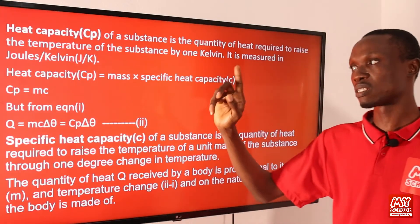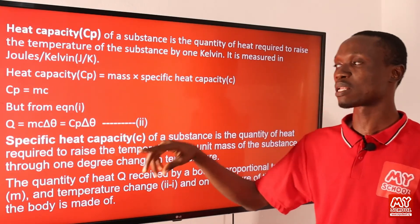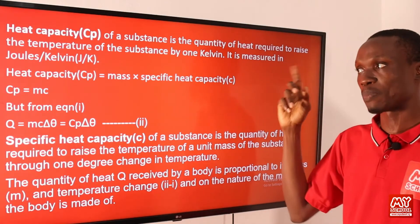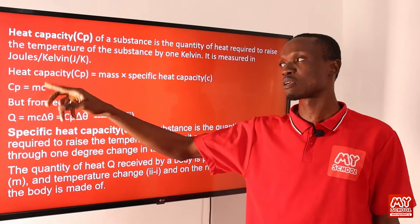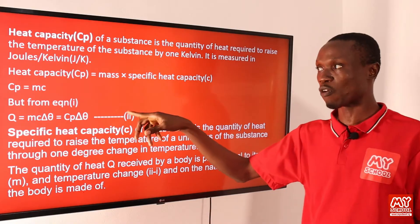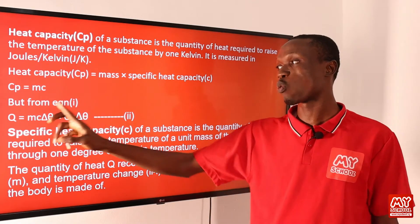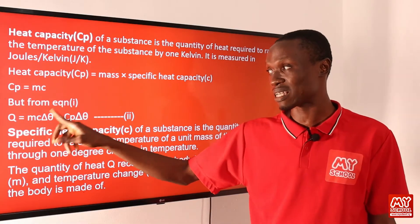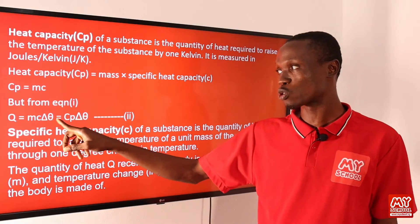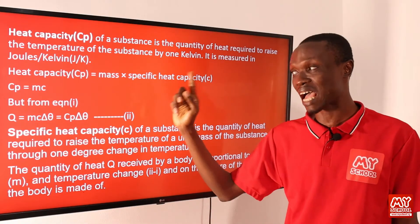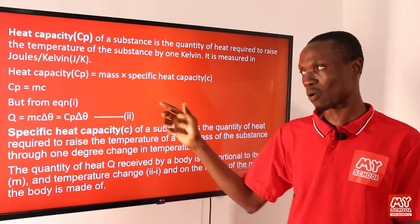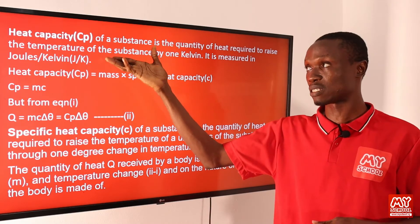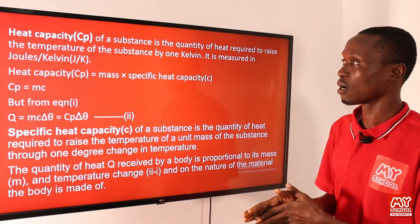Knowing that C_p equals mc, and remembering that mc also appears in our formula for quantity of heat, we can replace mc with C_p. So the quantity of heat Q = mcΔθ, which is also equal to heat capacity times Δθ.